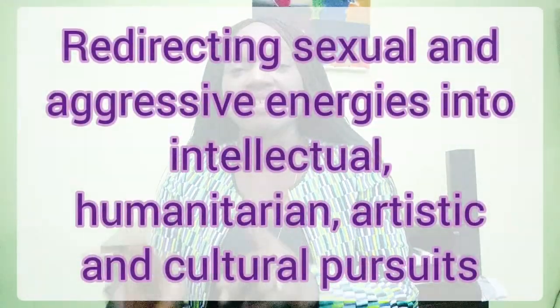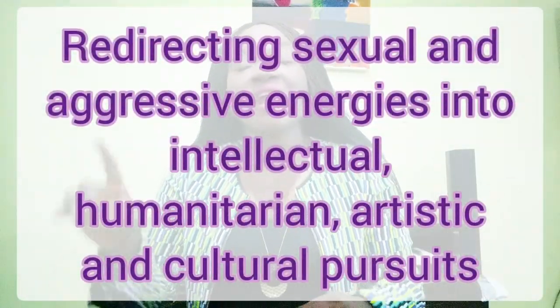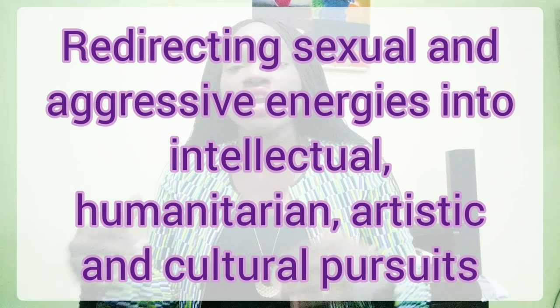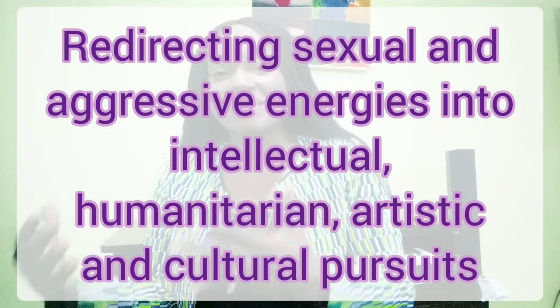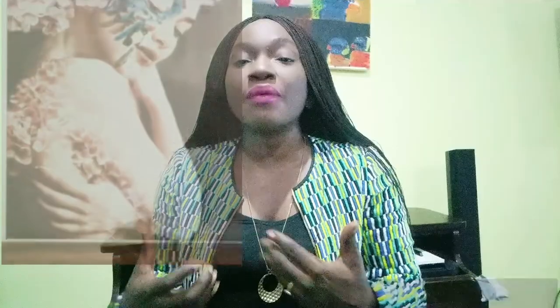Sublimation simply involves modifying these primitive impulses into societally acceptable behaviors. It is redirecting two major types of energy — sexual energies and aggressive energies — into societally acceptable behaviors. You redirect these crude and impulsive energies into behaviors that are acceptable to society.